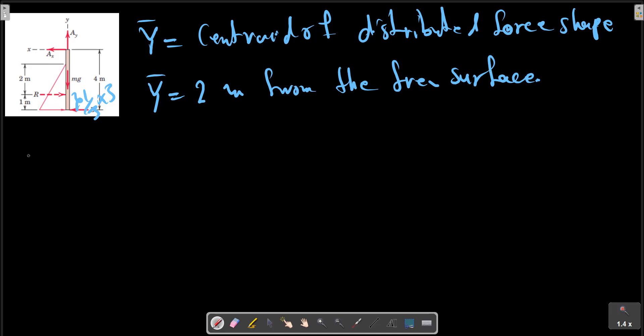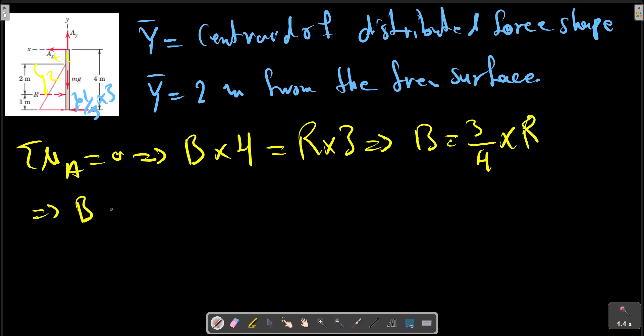So with making a momentum on A, we can find the force on B. B multiplied by 4 should be equal to R multiplied by 2 plus 1 over 3. B can be calculated as the final answer in kilonewtons.